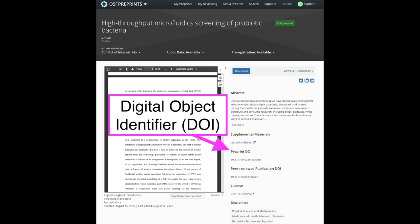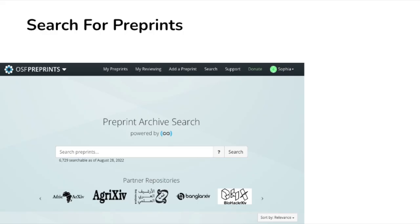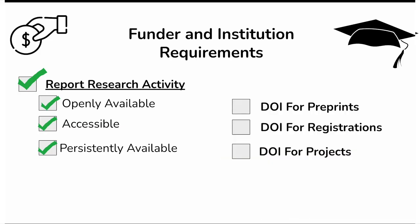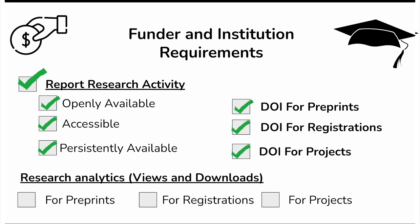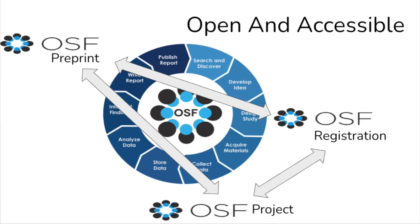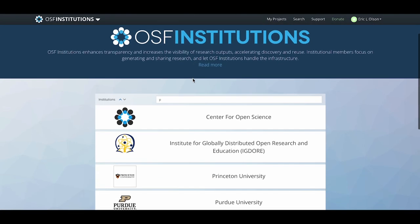Sophia can share the permanent DOI to her pre-print directly stored on the OSF. Alternatively, she can search through the pre-print repository or Google Scholar if she doesn't have the DOI readily available. She is also able to provide the DOIs for her public registration and project. The OSF provides her with analytics including the numbers of downloads and views on her pre-print, registration, and project to be able to report as required. Sophia's registration and materials in her OSF project are linked from the pre-print and vice versa, helping make the full story of her research study available online.